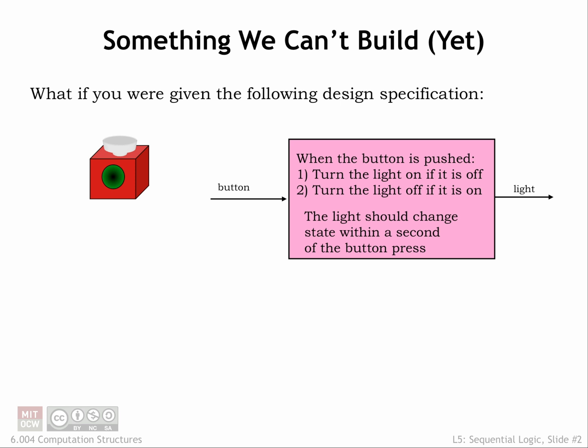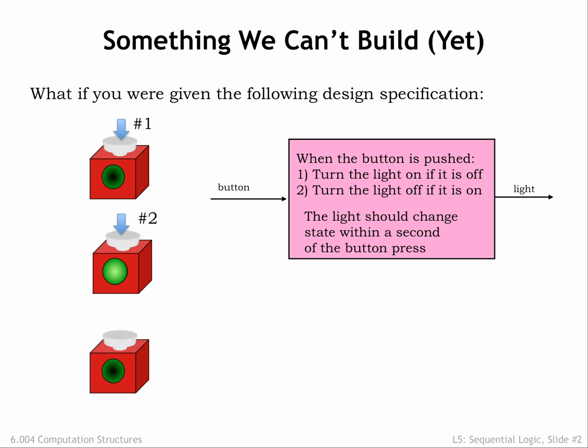But here's a simple device we can't build with combinational logic. The device has a light that serves as the output and a push button that serves as the input. If the light is off and we push the button, the light goes on. If the light is on and we push the button, the light turns off.